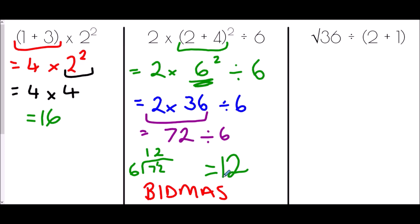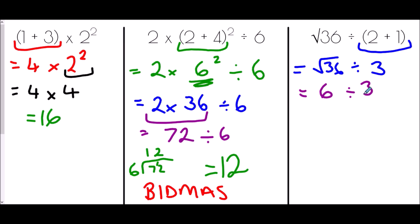The last question: √36 ÷ (2 + 1). Brackets come first, so the square root of 36 remains while we compute 2 + 1 = 3. Next, indices: the square root is an index. The square root of 36 is 6, since 6² = 36. Finally, 6 ÷ 3 = 2.